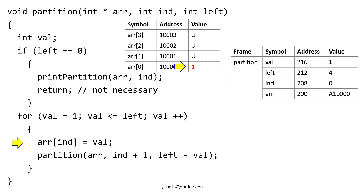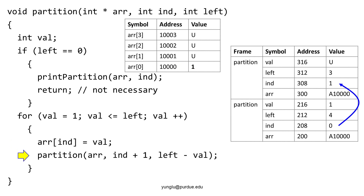The local variable vl is not initialized yet and also marked u. Since the third argument is not zero, the stop condition is false. The program moves to the for loop and initializes vl to 1. The next line assigns 1 to the first element of the array. The argument arr stores the address of the heap memory and it is 10,000. The index is zero, meaning the first element of the array. The next line is a function call. The first argument is the address in heap memory, 10,000. The second argument is ind plus 1, that is 1. The third argument is left minus vl: left is 4 and vl is 1, thus the third argument is 3.